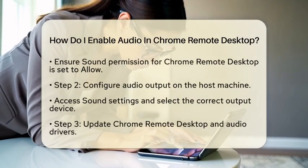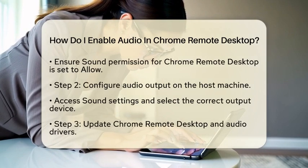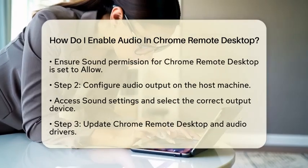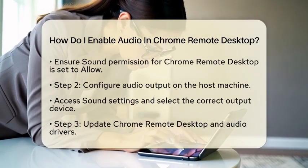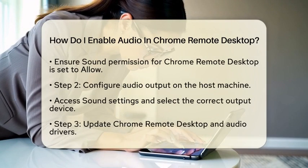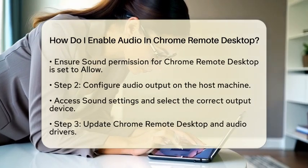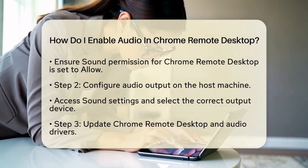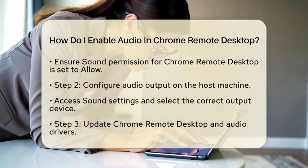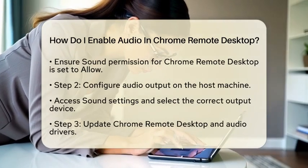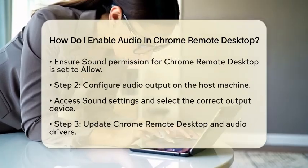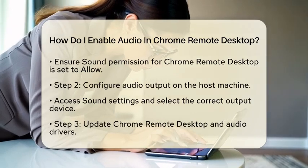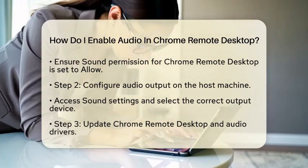Next, you need to configure the audio output on the host machine, which is the computer you are accessing remotely. Go to the sound settings in your operating system. Make sure the correct output device is selected. This ensures that the audio from the host machine is directed to the right speakers or headphones.